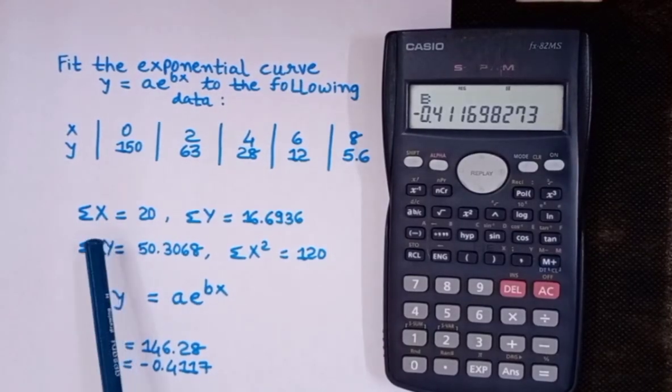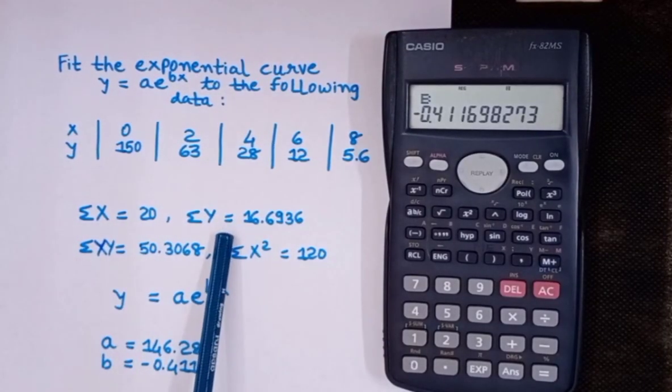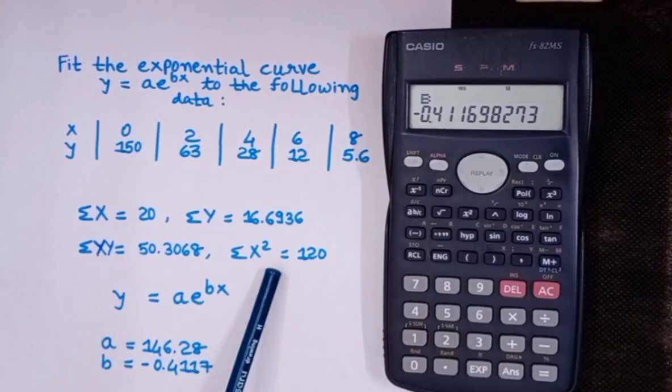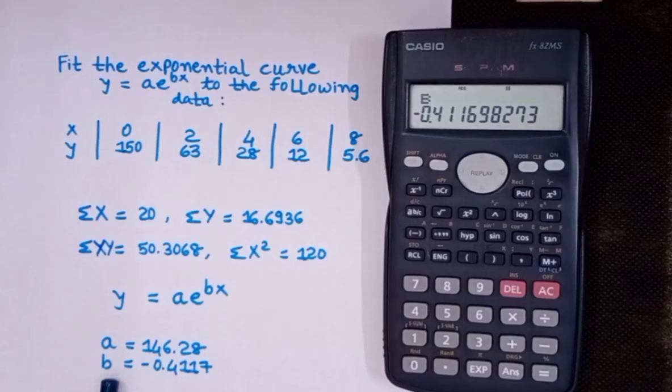So this is how you can find out sigma x, sigma y, sigma xy, sigma x squared, and a and b using calculator fx-82ms.